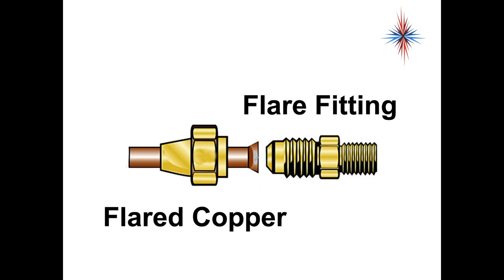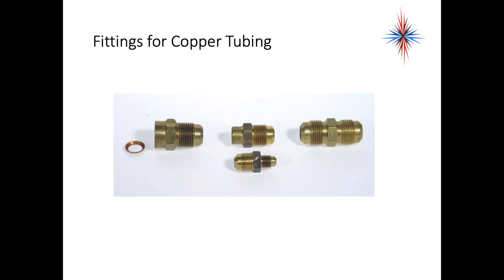Several different fittings are shown here for copper tubing. If you ever see a fitting with that small copper ring there, that's a compression fitting. We do not want to use those in air conditioning and refrigeration as well as oil. Don't use compression fittings. You only want to use flare fittings of some sort. There's reducers, there's other fittings, but don't use the compression fittings if you can at all avoid it.